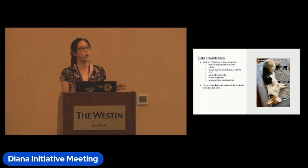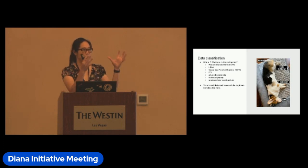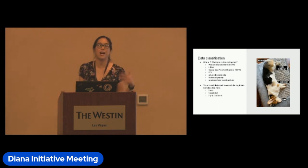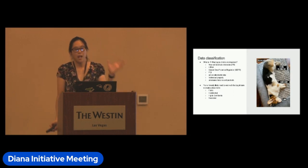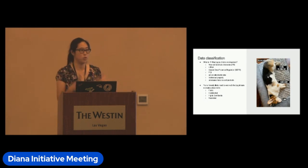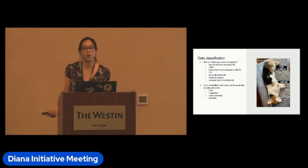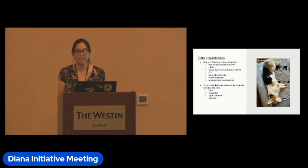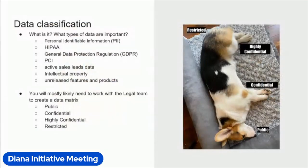Most likely you'll need to work with a legal team to create a data matrix — essentially buckets for putting types of data into, ranking data as public, confidential, highly confidential, or restricted. With a data matrix, you can determine how thorough a review you need to do to assess the risk of an app. For example, confidential apps might just require a scan, whereas restricted apps may trigger a pen test. If your company has a privacy and ethics team, they should be involved too, because what's best practice now could become law in the next few years.